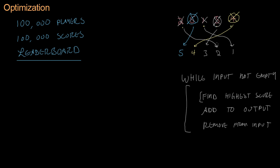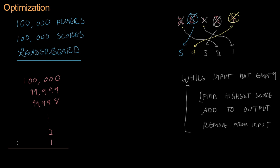On our first pass, we haven't taken anything out, so we have to look at all 100,000 items. On the next pass, we've removed one item, so we look at 99,999. This continues until there are only two items left, then one. To find the total number of data touches, we add all the numbers from 1 to 100,000.